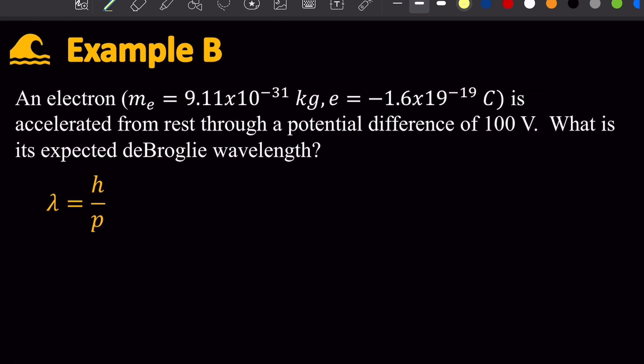So the de Broglie wavelength formula says the wavelength is Planck's constant over the momentum of the electron. Now in this case, I don't have the velocity of the electron, so I can't use momentum equals mv. What I can use is the fact that momentum is the square root of 2 mass times kinetic energy.